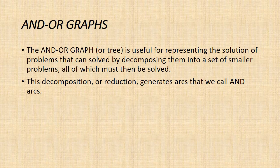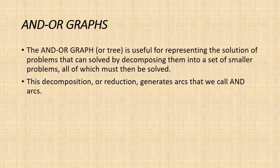The AND-OR graph, or tree, is useful for representing the solution of problems that can be solved by decomposing them into a set of smaller problems, all of which must then be solved. This decomposition, or reduction, generates arcs that we call AND arcs. One AND arc may point to any number of successor nodes, all of which must be solved in order for the arc to point to a solution. Just as in an OR graph, several arcs may emerge from a single node, indicating a variety of ways in which the original problem might be solved. This is why the structure is called not simply an AND graph but rather an AND-OR graph, which also happens to be an AND-OR tree.